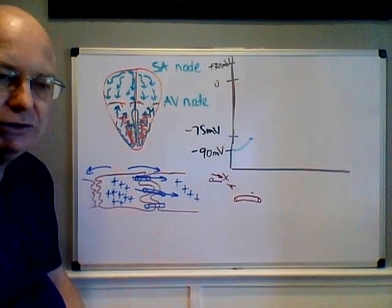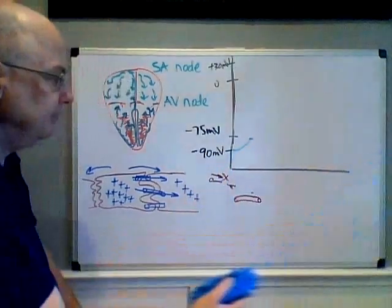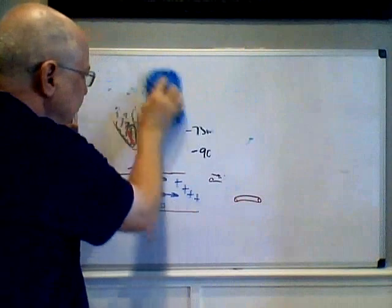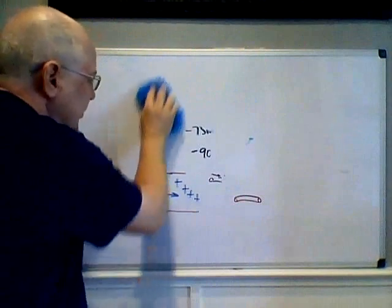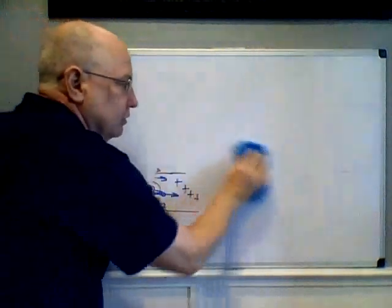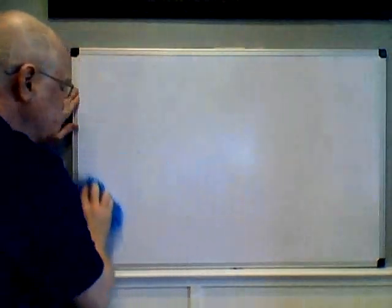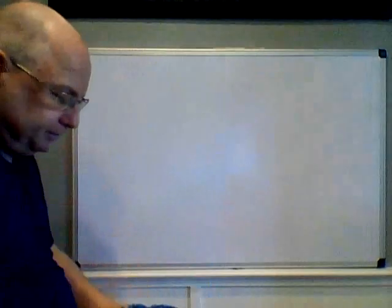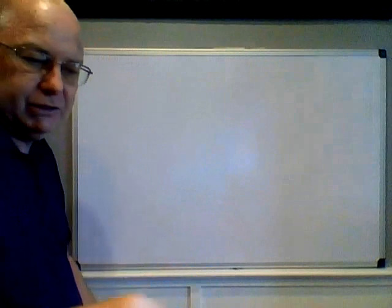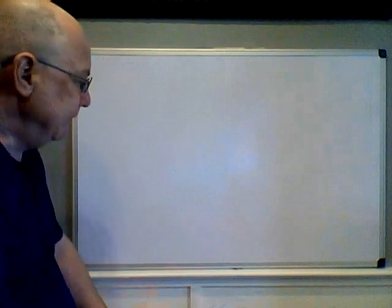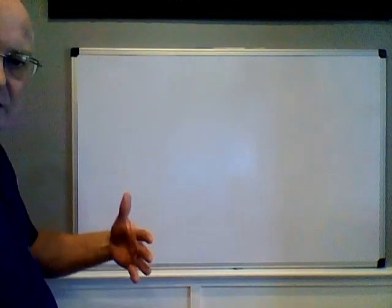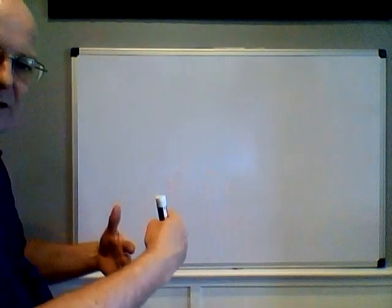We're going to erase all this and go over the individual cardiocyte action potential — one single cardiac muscle cell. This is all going to be based on the laws of diffusion and active transport: sodium ions diffusing into the cell, potassium ions diffusing out of the cell, and the sodium-potassium pump.